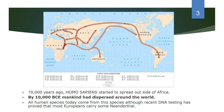All human species today come from Homo sapiens, although recent DNA testing has proved that most Europeans carry some Neanderthal in them — basically two different hominids who met and intermingled. Over time the sheer number of Homo sapiens outnumbered the Neanderthals, who went extinct 35,000 years ago. However, those of us from the European side of the world probably have a little bit of Neanderthal still inside us.